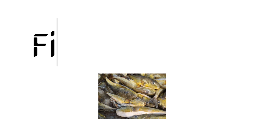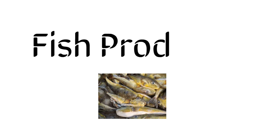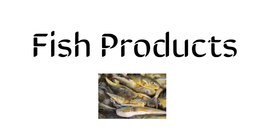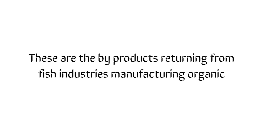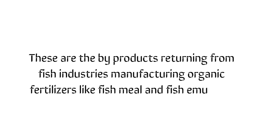Fish Products. These are the by-products from fish industries manufacturing organic fertilizers like fish meal and fish emulsion. This contains a high level of nitrogen and is made quickly available for plants.